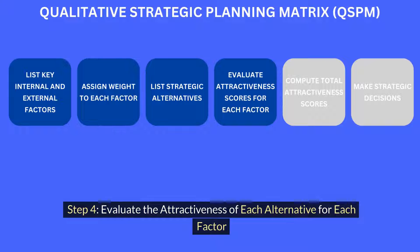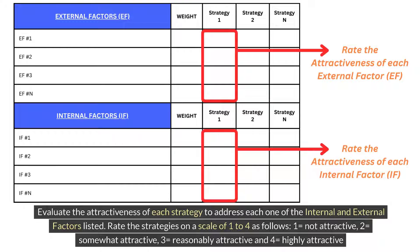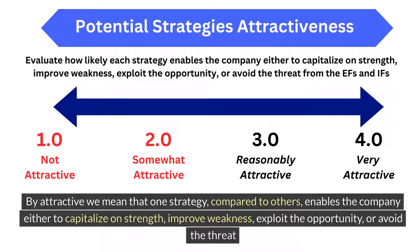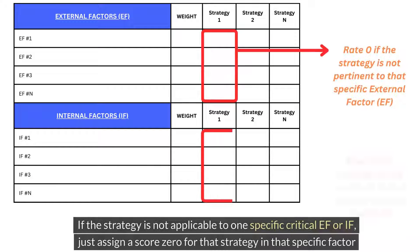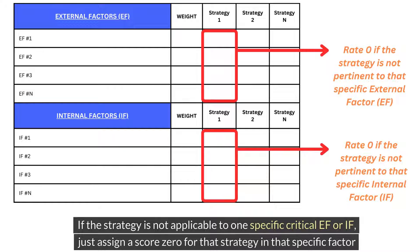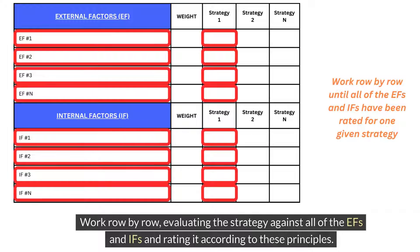Step 4: Evaluate the attractiveness of each alternative for each factor. Evaluate the attractiveness of each strategy to address each one of the internal and external factors listed. Rate the strategies on a scale of 1 to 4. By attractive, we mean that one strategy, compared to others, enables the company either to capitalize on a strength, improve a weakness, exploit an opportunity, or avoid a threat. If the strategy is not applicable to one specific critical EF or IF, just assign a score of 0 for that strategy in that specific factor. Work row by row, evaluating the strategy against all of the EFs and IFs and rating it according to these principles.